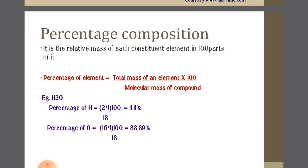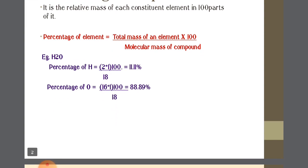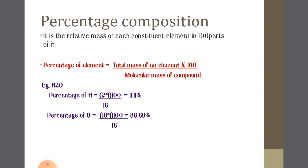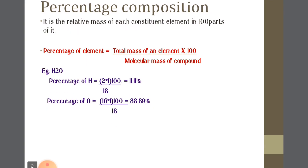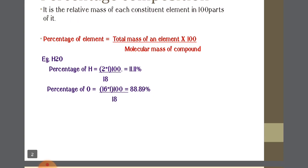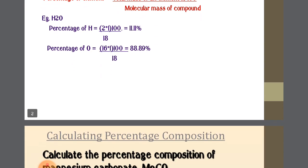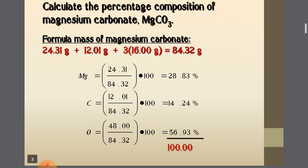When you add the percentage of each element, the total should come around 100. So that indicates percent composition — it's the relative mass of each constituent element in hundred parts of it. The formula to remember: percentage of element = total mass of element upon molecular mass of compound, multiplied by 100.